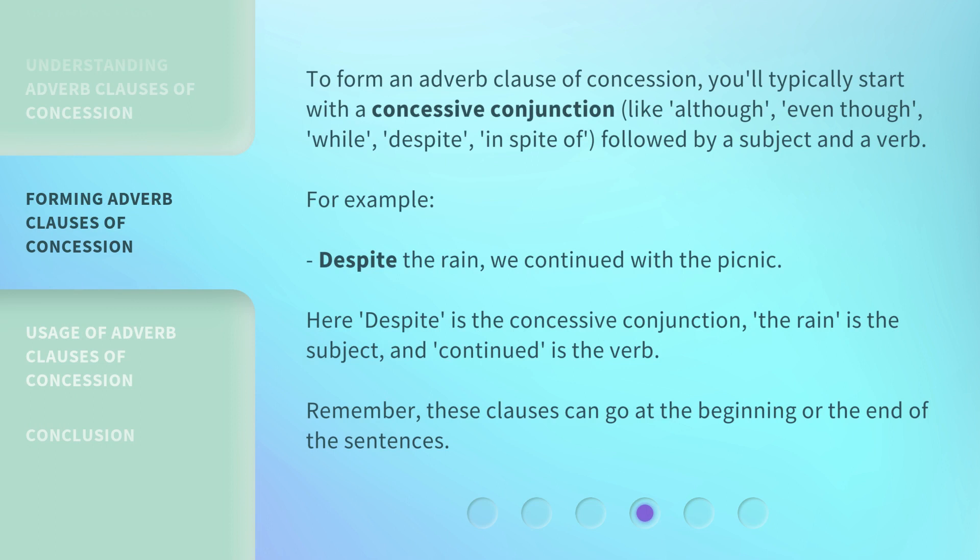To form an adverb clause of concession, you'll typically start with a concessive conjunction like: although, even though, while, despite, or in spite of, followed by a subject and a verb. For example: despite the rain, we continued with the picnic. Here, 'despite' is the concessive conjunction, 'the rain' is the subject, and 'continued' is the verb. Remember, these clauses can go at the beginning or the end of the sentence.